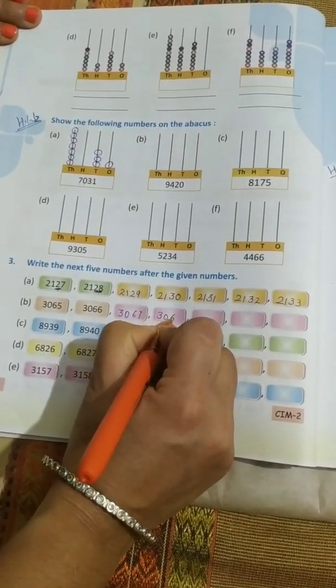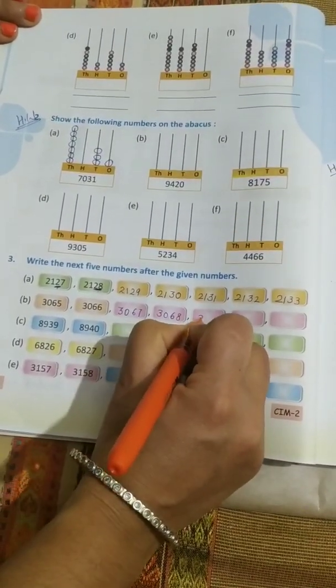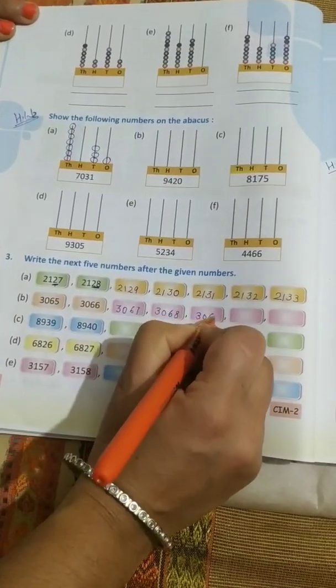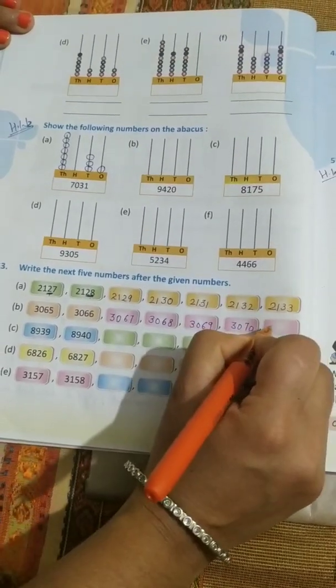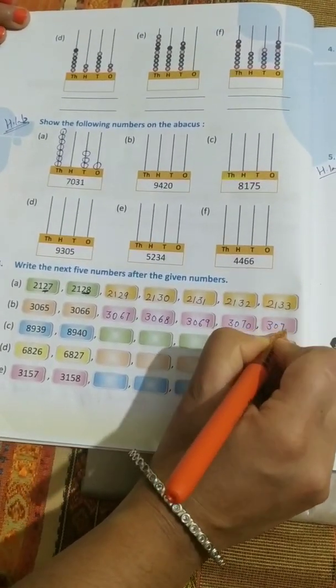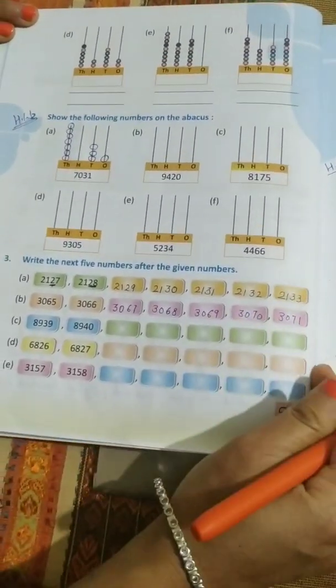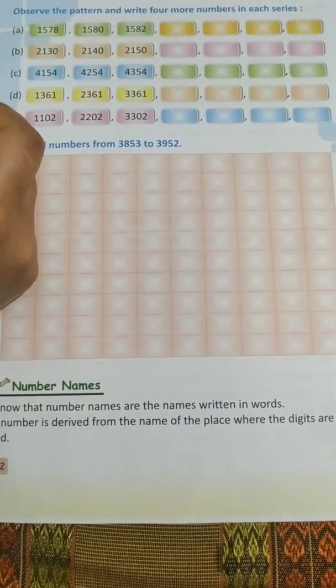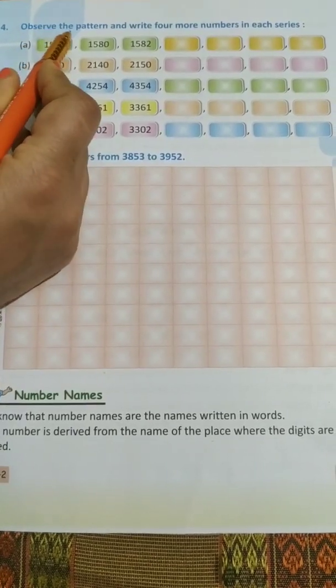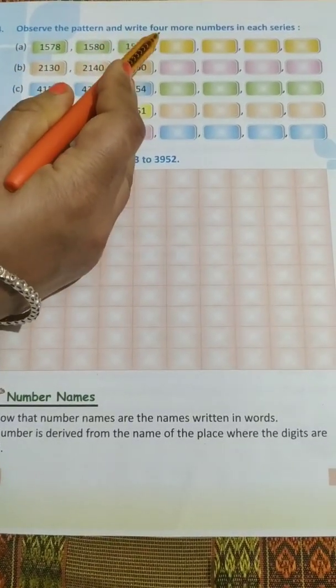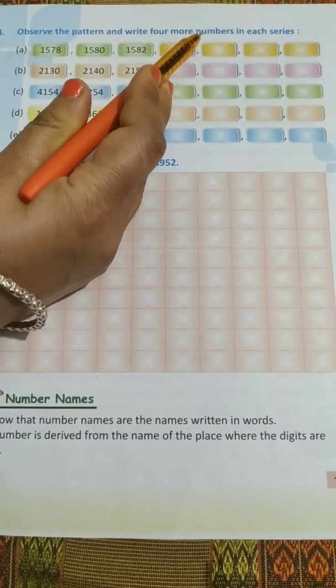3067, 3068, 3069, 3070, then 3071. Now fourth question. Fourth question: Observe the pattern and write 4 more numbers in each series.